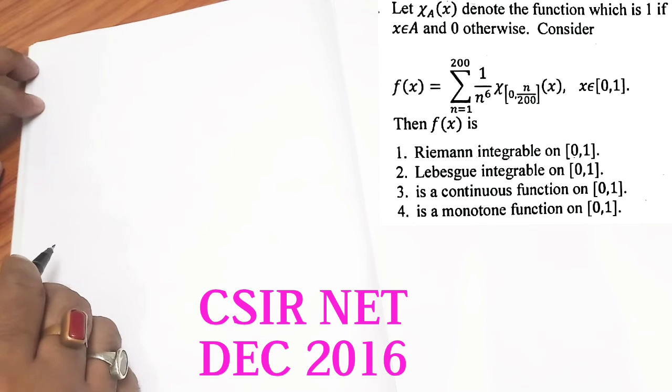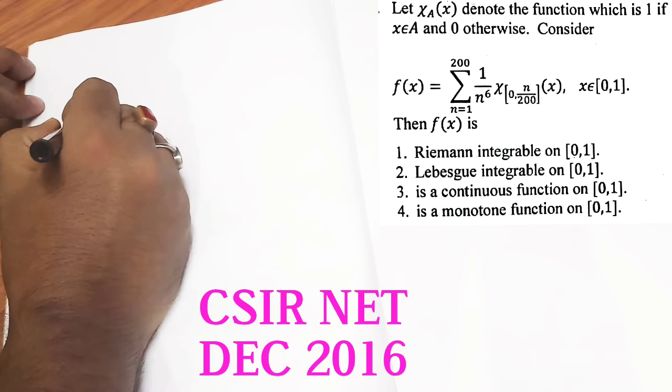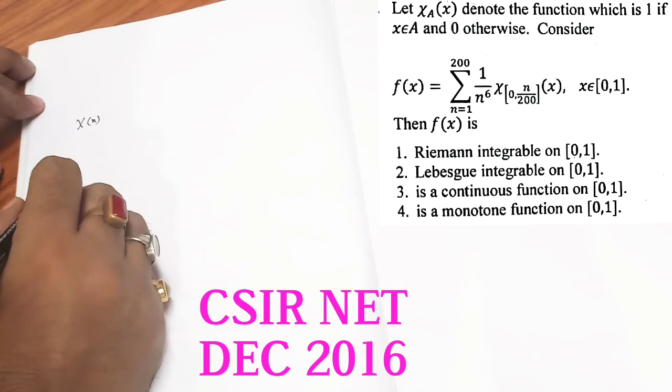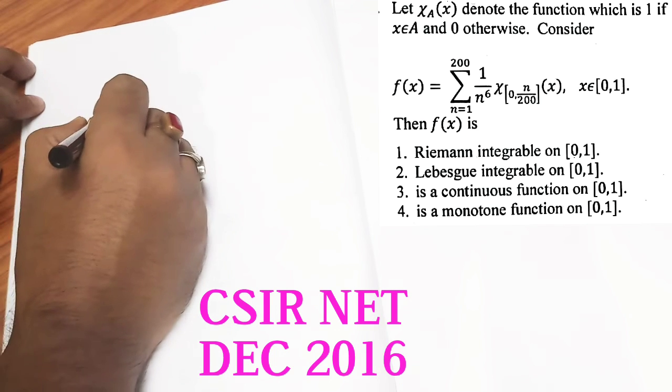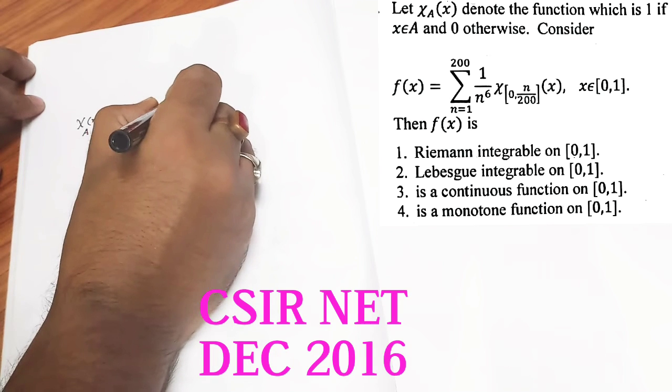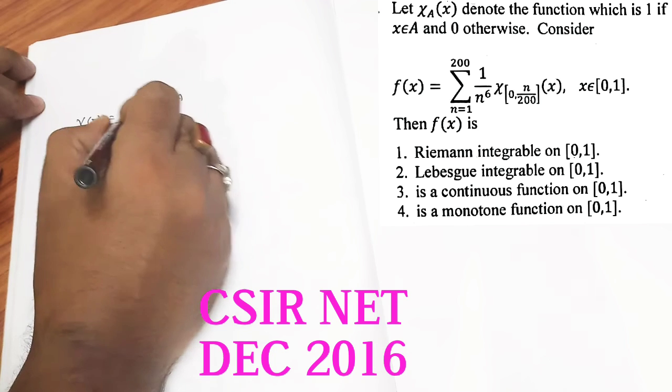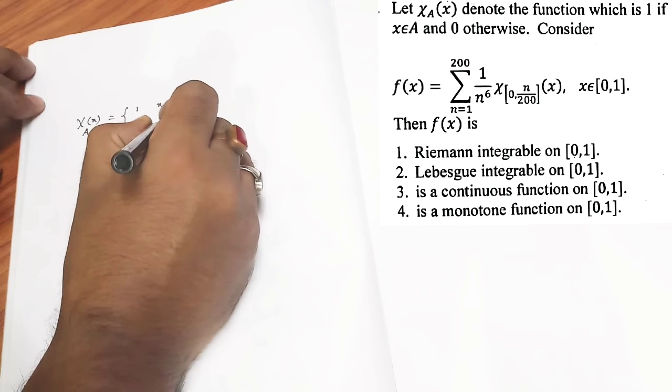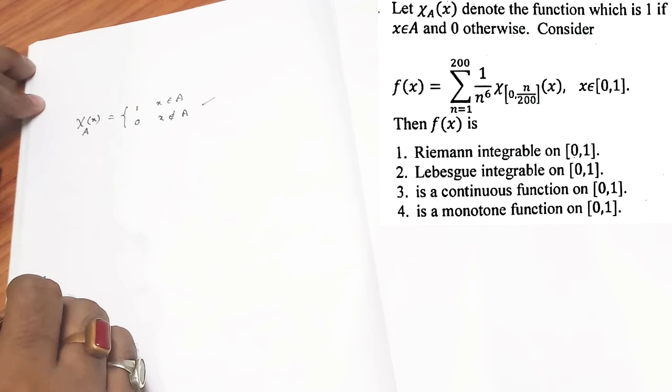In the problem, they have given us an indicator function which is χ_a(x). This one is equal to 1 when x belongs to the set a, and this one equals to 0 when x does not belong to a. This is the indicator function we have.